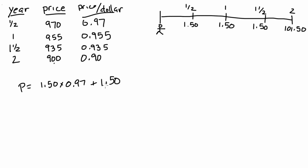For the year one cash flow, we'll receive $1.50 and we're willing to pay $0.955 for every dollar we receive in one year, so the present value is $1.50 times 0.955. In a year and a half, we'll receive $1.50, and for every dollar we receive in a year and a half we're willing to pay $0.935.